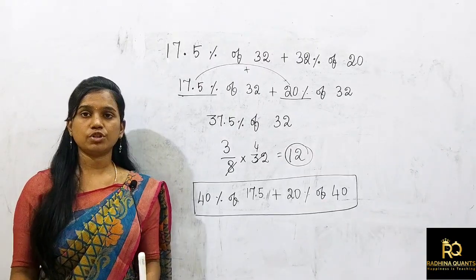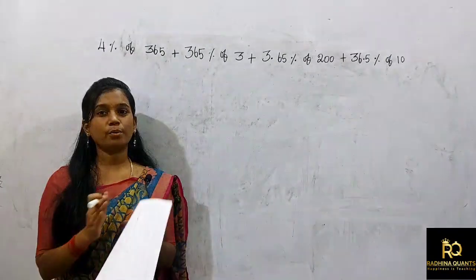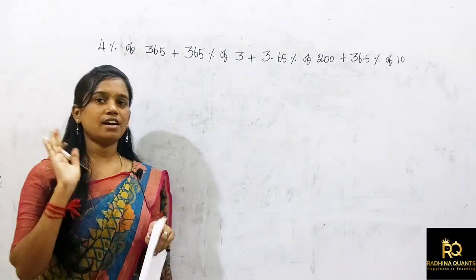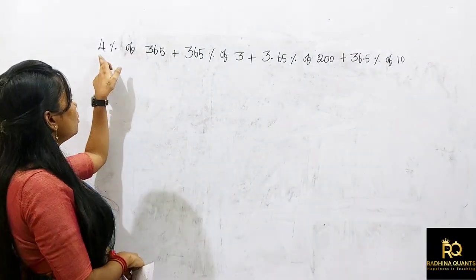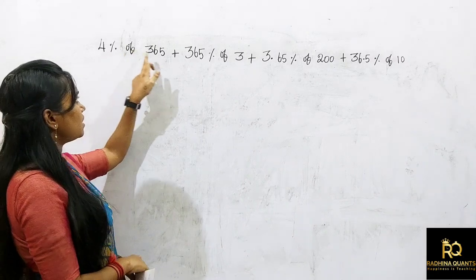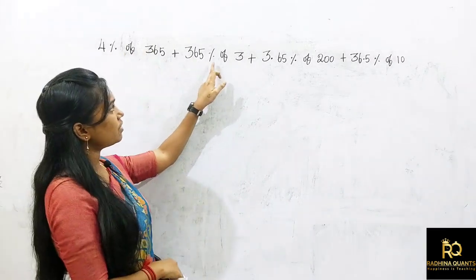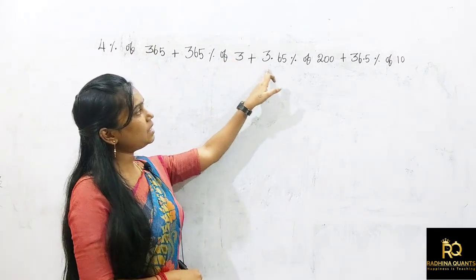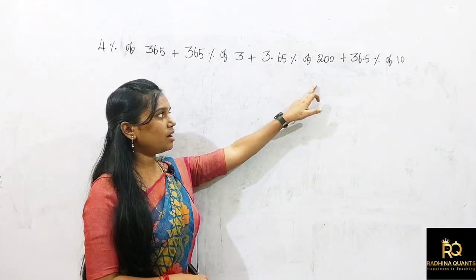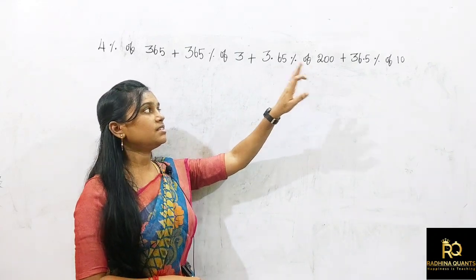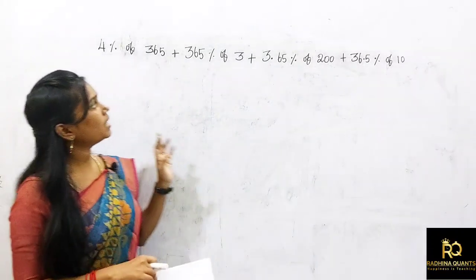Now let's go to the fourth question, which is very lengthy but interesting. The question is: 4% of 365 plus 365% of 3 plus 3.65% of 200 plus 36.5% of 10 — four parts.